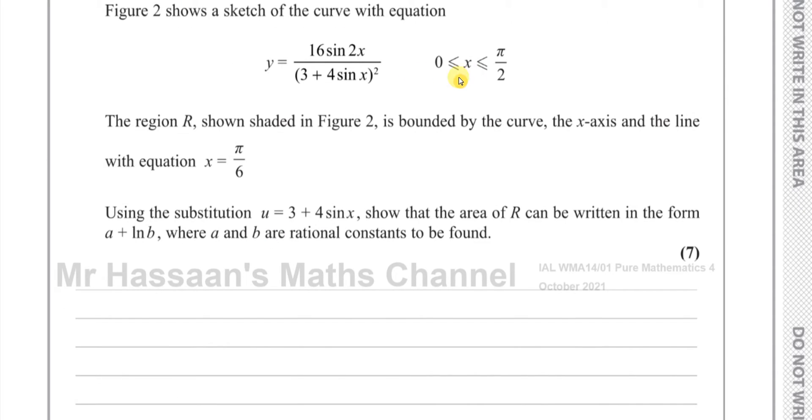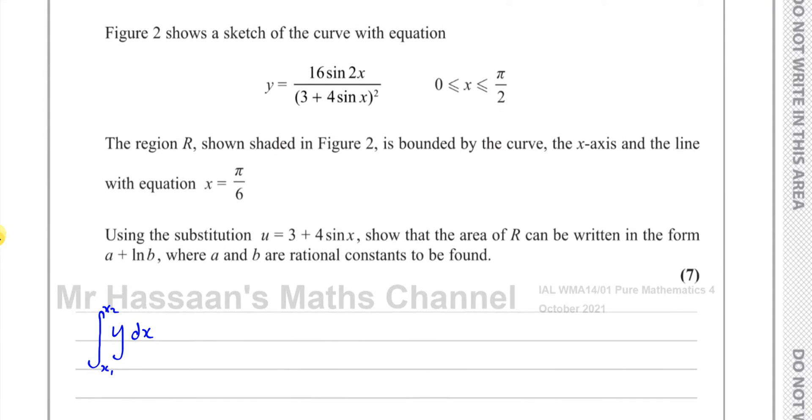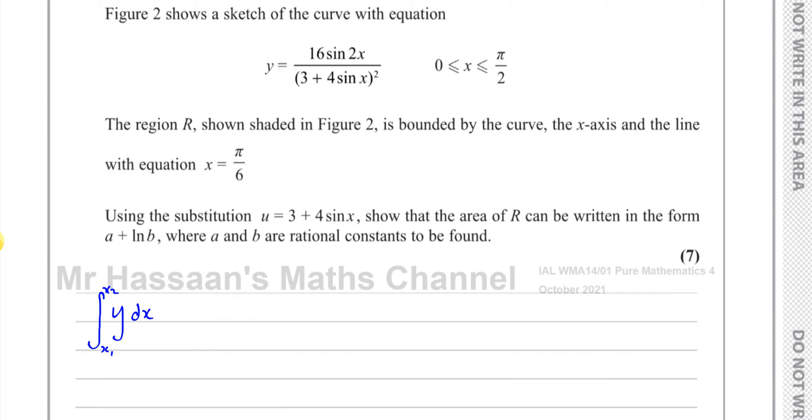Now whenever we have to deal with integration by substitution, the best way to deal with it is to start off always with this. Our objective is to integrate the function y with respect to x between the limits given, x₁ and x₂, which in this case are π/6 and π/2. Now because we have to use this substitution, we're going to put ∫y dx = ∫(y dx/du)du. If we always start off like this, everything falls into place so nicely.